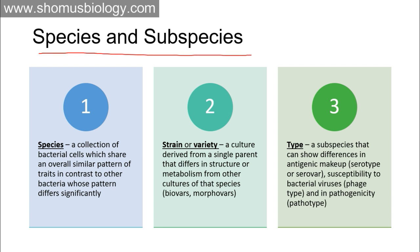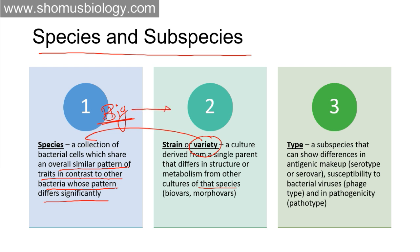Regarding species and subspecies distribution in bacteria: bacterial species is not at all like the species concept in eukaryotes. A species in bacteria is a collection of bacterial cells that share an overall similar pattern of traits, in contrast to other bacteria whose pattern differs significantly. A strain or variety is a culture derived from a single parent that differs in structure or metabolism slightly from other cultures of that species. Strain is essentially a breakdown portion of a species.